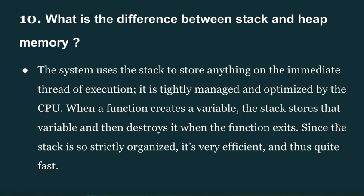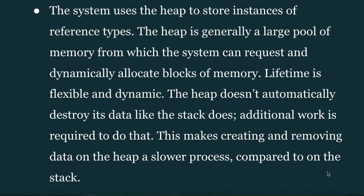What is the difference between stack and heap memory? The system uses the stack to store anything in the immediate field of execution. It is tightly managed and optimized by the CPU. When a function creates a variable, the stack stores it and then destroys it when the function exits. Because the stack is strictly organized, it is very efficient and fast. The heap stores instances of reference types and is a large pool of memory from which the system can dynamically allocate blocks. Heap memory has a flexible and dynamic lifetime — it doesn't automatically destroy data like the stack does, making it slower.